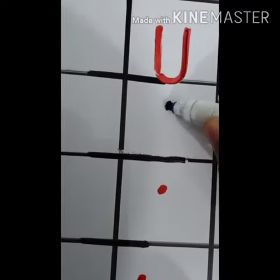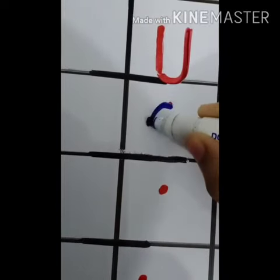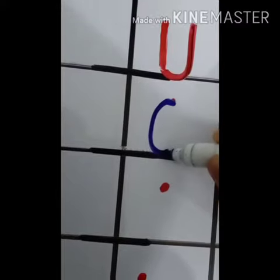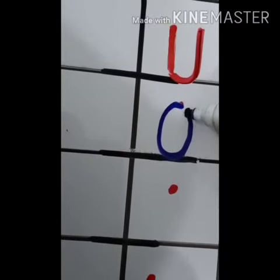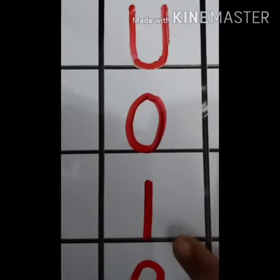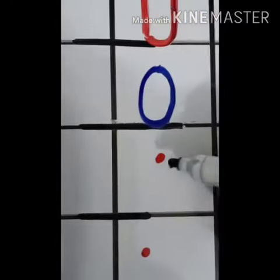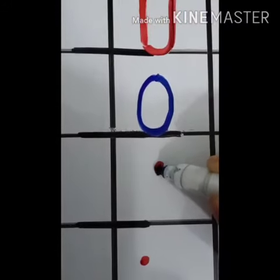First number is zero. Dot pe pencil rakhenge. Zero is round and round. Next number one — one is come down.